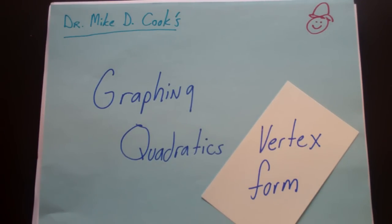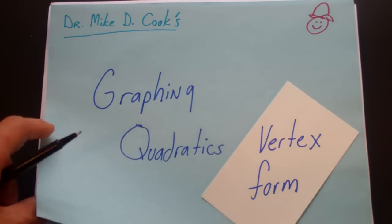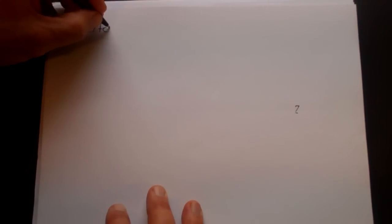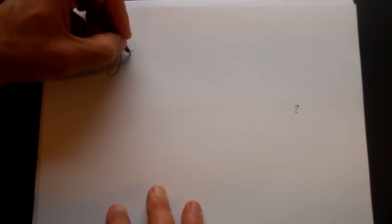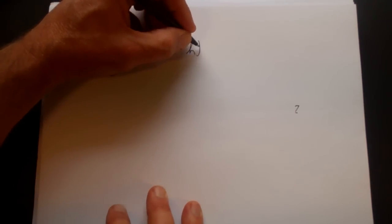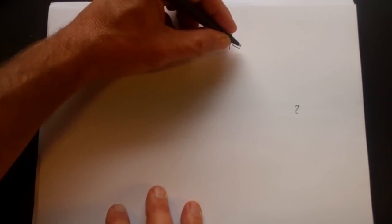We are going to continue looking at graphing quadratics, but now we are going to look at equations in vertex form. A quadratic function written in vertex form is a parabola written in this form: y is equal to a parenthesis x minus h squared plus k.